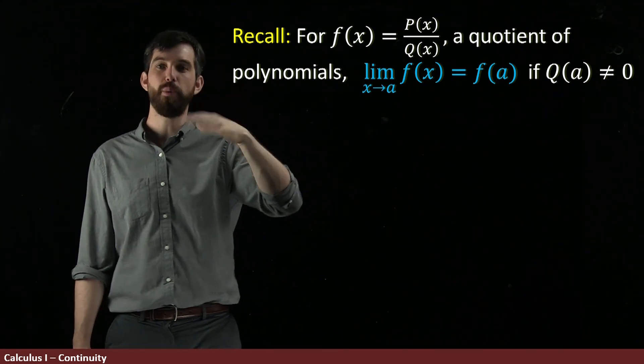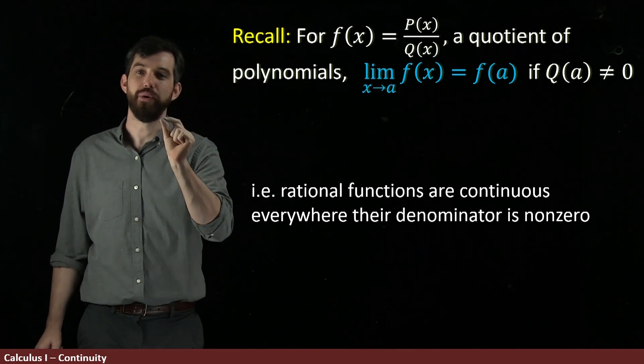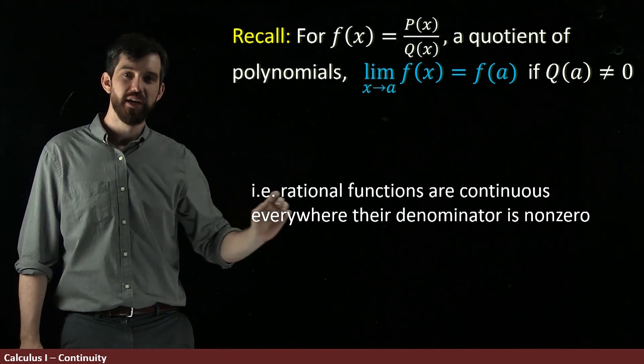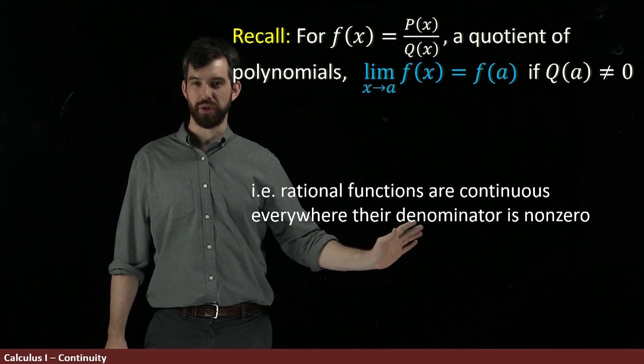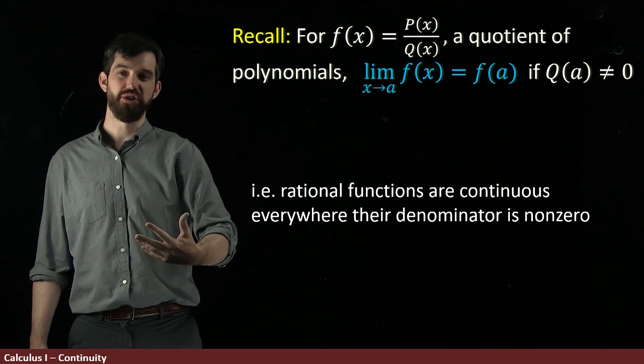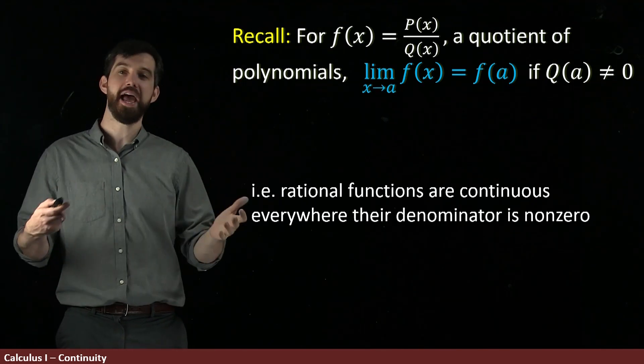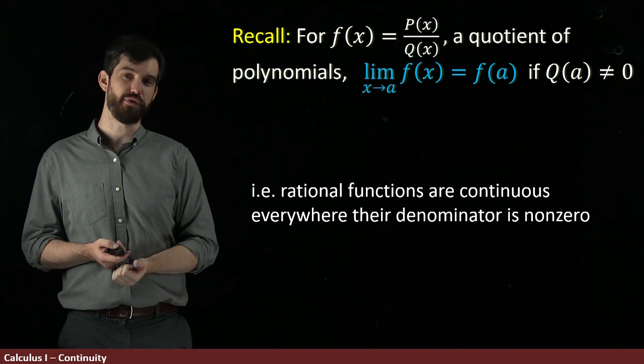In other words, what we've seen before, we can recast as saying that all rational functions are continuous, at least where their denominator is non-zero. So as long as you have your denominator being non-zero, then a rational function is continuous. So this creates a big, large set of examples of continuous functions for us.